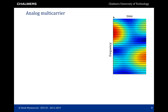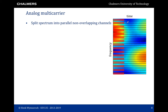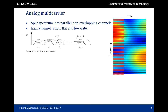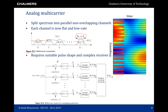An intuitive alternative is to go for analog multi-carrier. We have our channel in time and frequency, and we split the large frequency band into parallel non-overlapping channels. If the bandwidth per channel is sufficiently small, each channel is now frequency flat and of low rate. The bandwidth of each channel should be much less than the coherence bandwidth of the channel. However, this requires a narrow-band pulse shape and a more complex receiver, and we need a guard band between the different channels, leaving part of the spectrum unused. So analog multi-carrier is relatively inefficient.